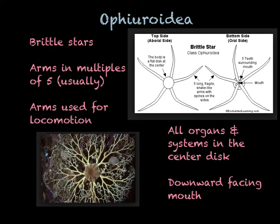Brittle stars are another one you'll see around here. They're in class Ophiuroidea. Their arms are in multiples of five, and they tend to use their arms for locomotion. All of their tube feet and organs are in their central disc, unlike a regular sea star. Their mouths also face downward, and they have teeth similar to other echinoderms.